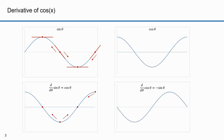Geometrically, the derivative of the sine function is a cosine function. We can do the same geometrically for the cosine. Here's a point where the tangent slope is zero, corresponding to a specific point on the sine. Here's a point where the slope is minus one, and here's a point where the slope is one, each corresponding to matching points on the minus sine function.